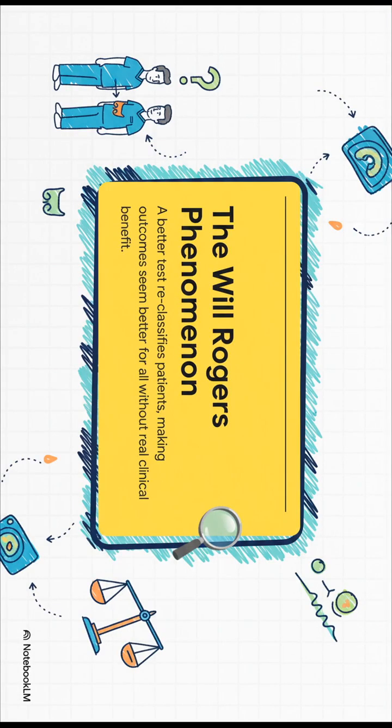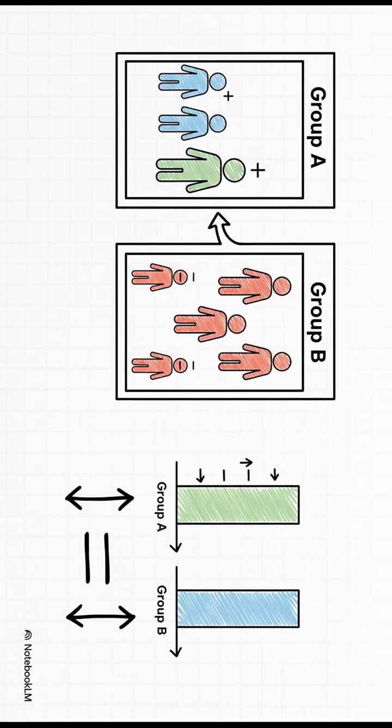Plus, you've got this weird statistical thing called the Will Rogers phenomenon. It can be tricky. It's like this: move the top student to a smarter class, suddenly both class averages improve.